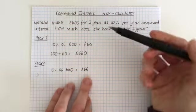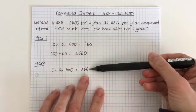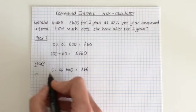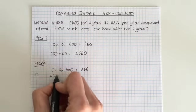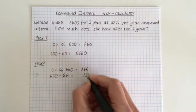So you can see that in year two, she actually earns a little bit more interest on the money that's invested. She earns £6 more. So then by the end of year two, she's got £660 plus the £66, which is £726. So that's how much she would have in a bank account after two years.